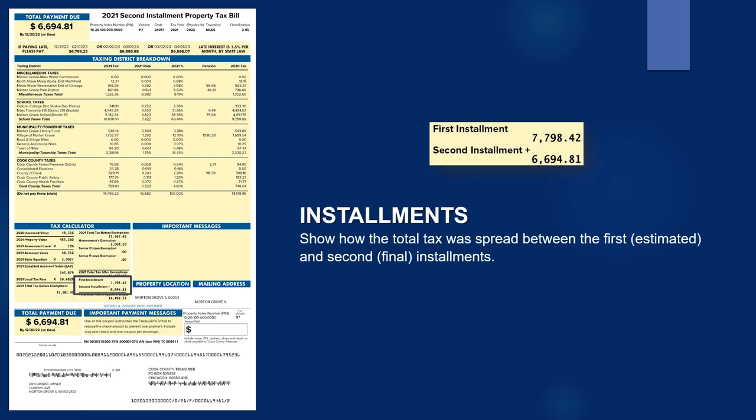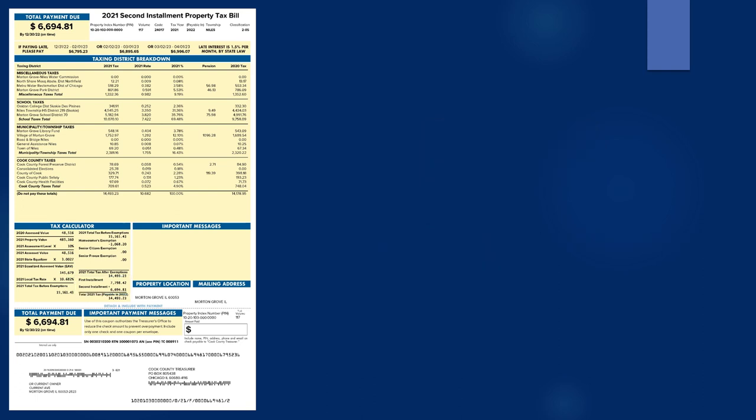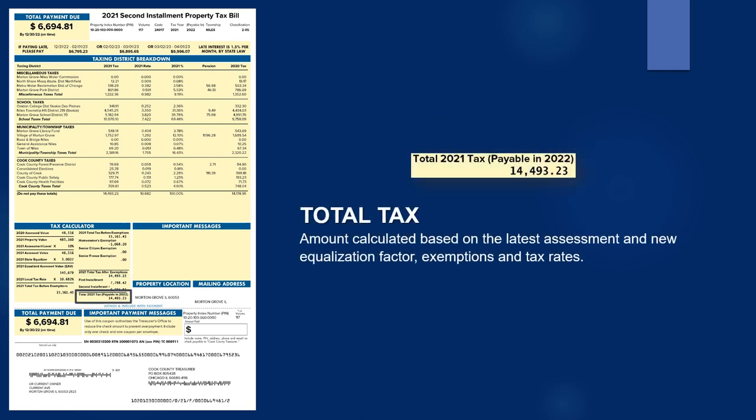Installments show how the total tax was spread between the first estimated and second final installments. The total tax is the amount calculated based on the latest assessment and new equalization factor, exemptions, and tax rates.